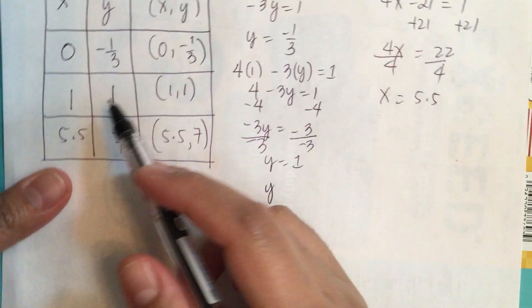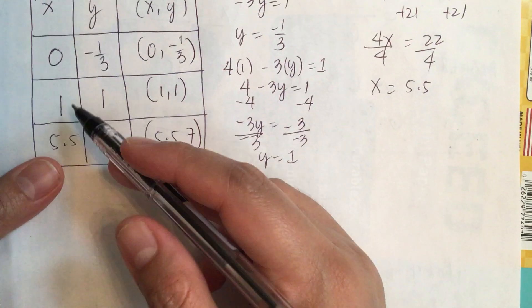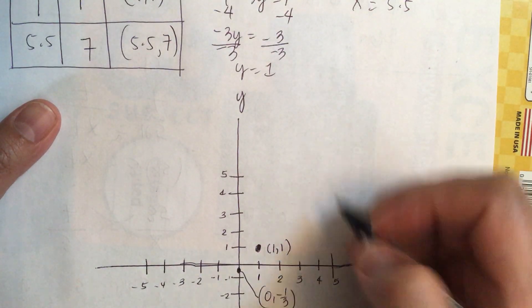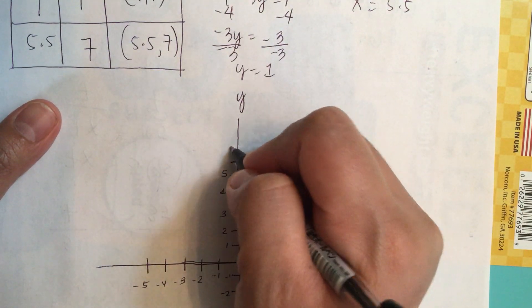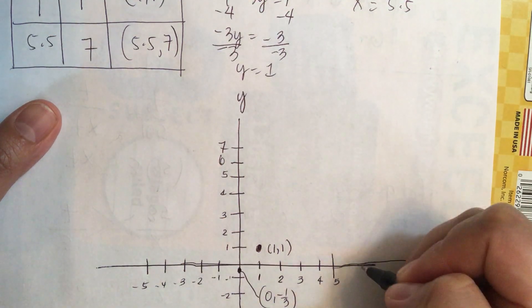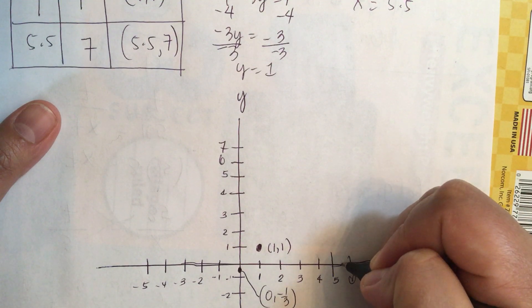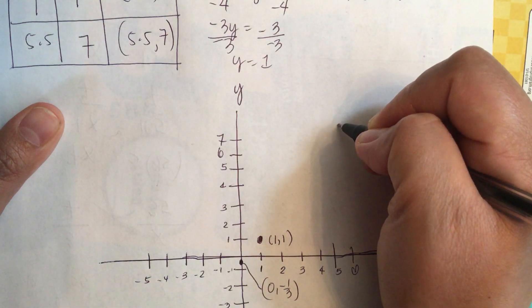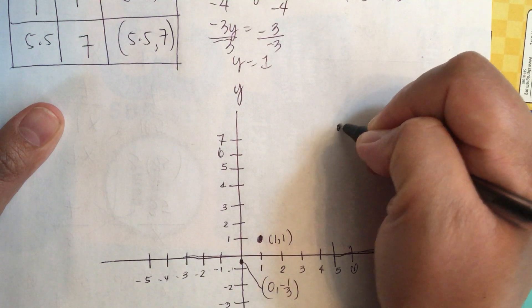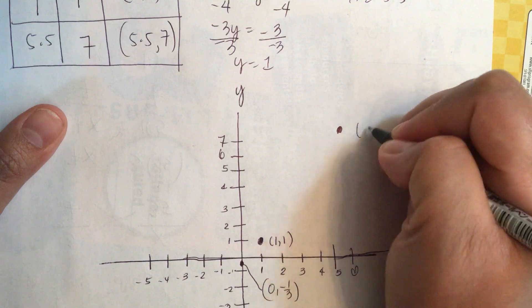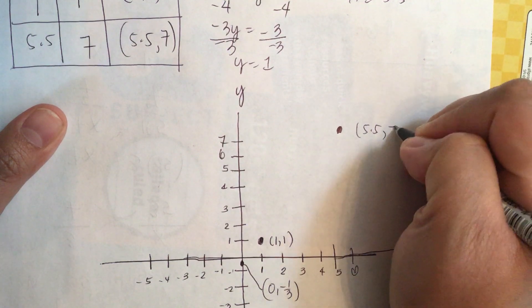And then when y is 7, x is 5.5. So here is 5, so we need 6, 7. This is 6, so it's about right here, 5.5, 5 and a half. And we go all the way to 7. So this is the point 5.5 comma 7.